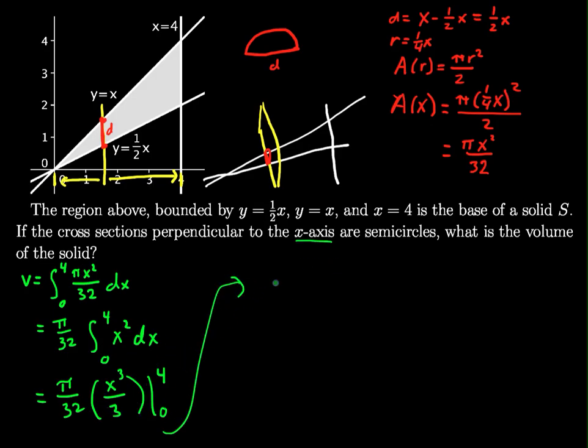And we put in the 4, we put in the 0, so I get that that is equal to pi over 32, multiplied by 4 cubed over 3, minus 0 cubed over 3. And we all know 0 cubed is 0, divided by 3 is 0. This makes no difference to my problem. So this will equal 4 cubed is going to give me 64, so that's pi over 32, multiplied by 64 thirds.